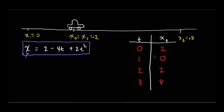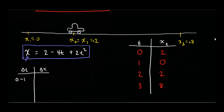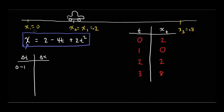Now let's determine the displacement over various intervals. For zero to one second: x at time 1 is zero, x-naught is 2, so delta x is zero minus 2, which is negative 2. That makes sense — we started at positive 2 and ended at zero, moving 2 meters in the negative direction.